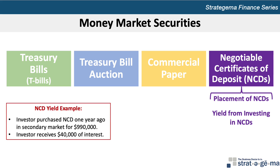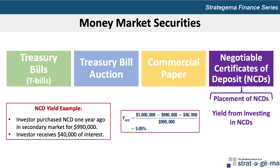For example, say an investor purchased an NCD a year ago in the secondary market for $990,000. The investor redeems it today upon maturity and receives $1,000,000, plus interest of $40,000. The annualized yield YNCD on this investment is 5.05%, calculated as the $1,000,000 par value received at maturity, less the $990,000 purchase price, plus the $40,000 in interest, all divided by the $990,000 purchase price.